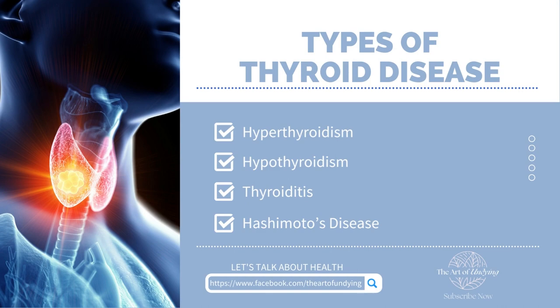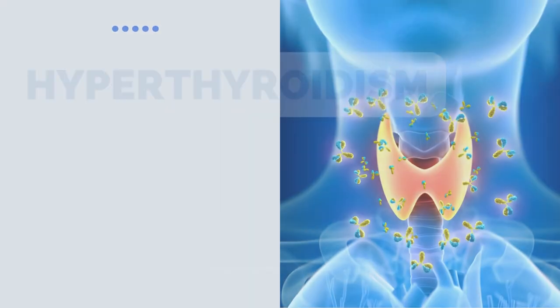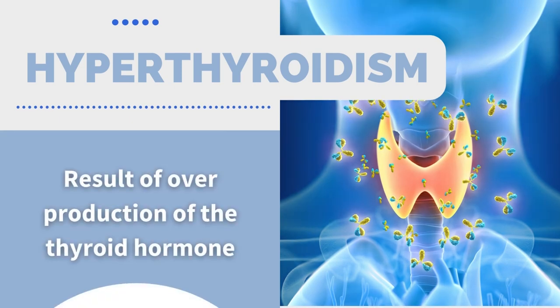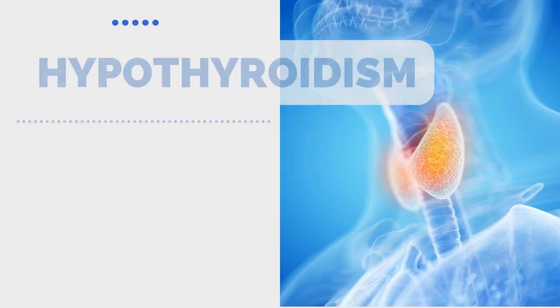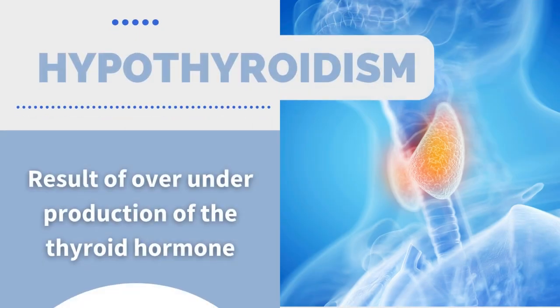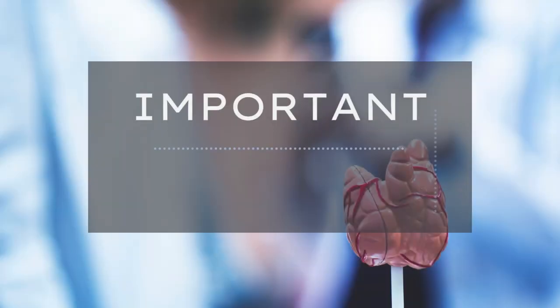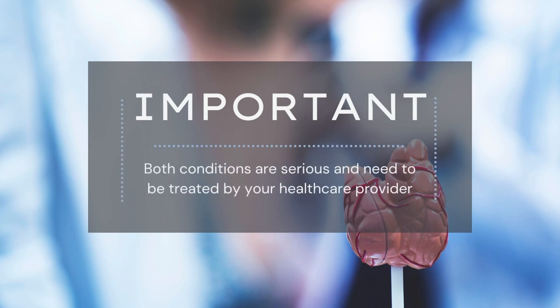When your thyroid doesn't work properly, it can impact your entire body. If your body makes too much thyroid hormone, you can develop a condition called hyperthyroidism. When your body does not have enough thyroid hormone, it's called hypothyroidism. Both conditions are serious and need to be treated by your healthcare provider.